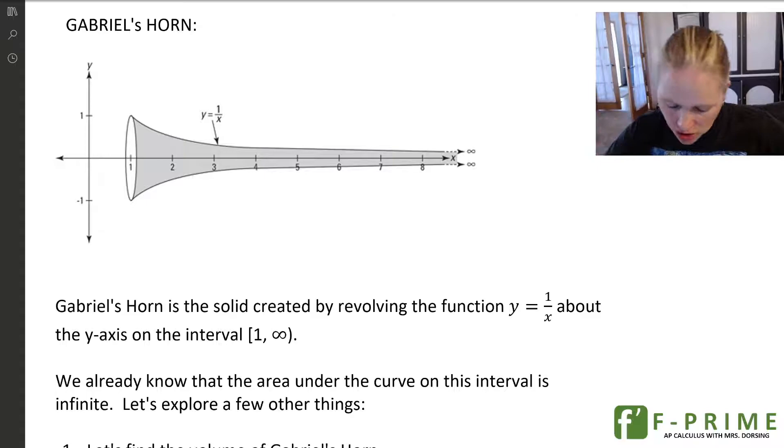So of course, mathematicians coming from that European Christian background would name things after the things that they know. And so here we have, this is what Gabriel's horn looks like. And specifically, Gabriel's horn is found by taking the function y = 1/x and revolving it around the x-axis.